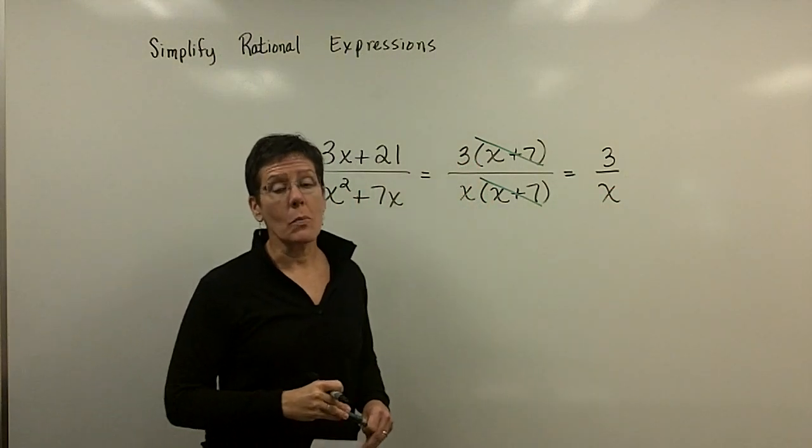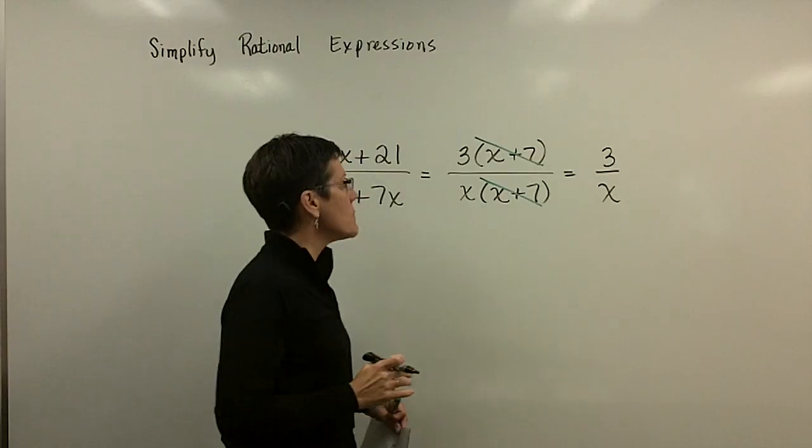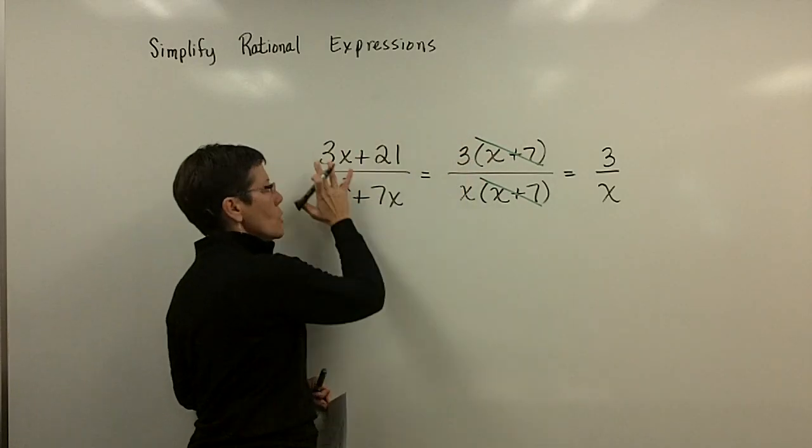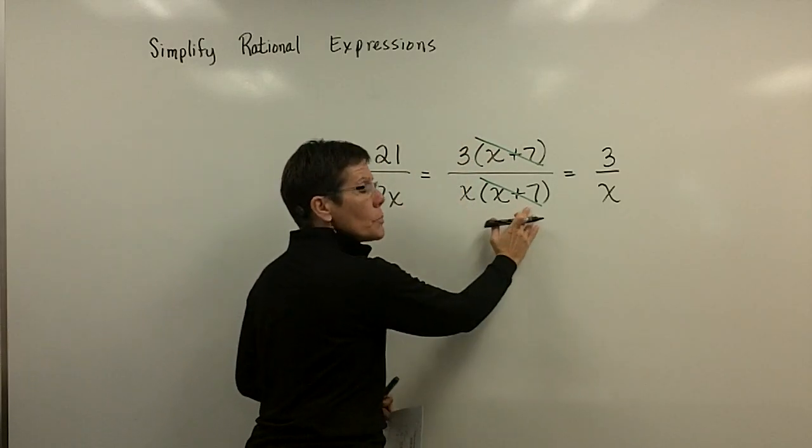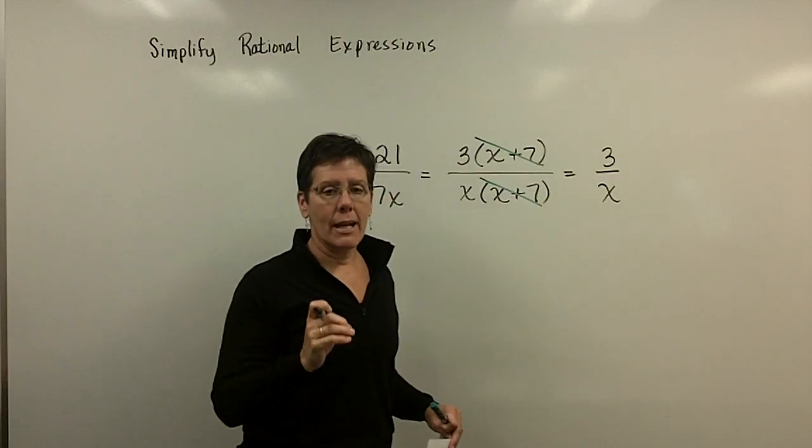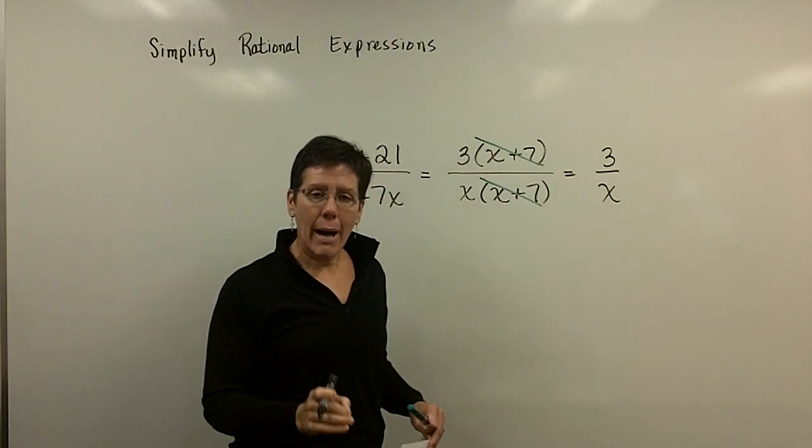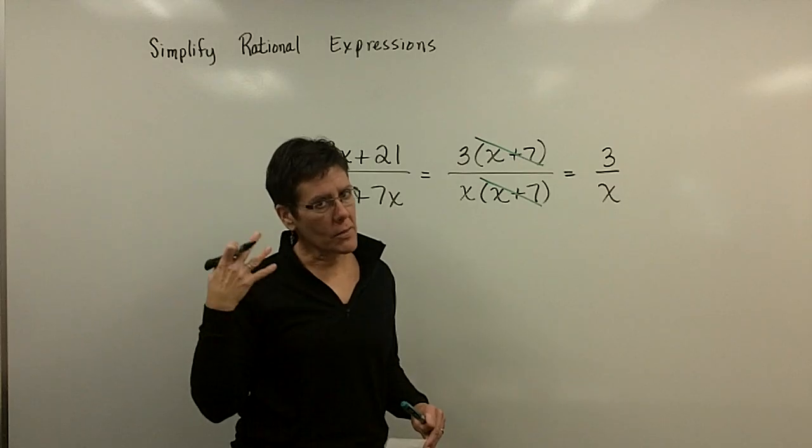Let's talk about those restrictions on the domain for this one because this one's a pretty easy one. You have to talk about it in terms of your original problem. And my original problem had in the denominator an x and an x plus 7. By the zero product rule, if that's the way you, it's a pretty easy problem to see,